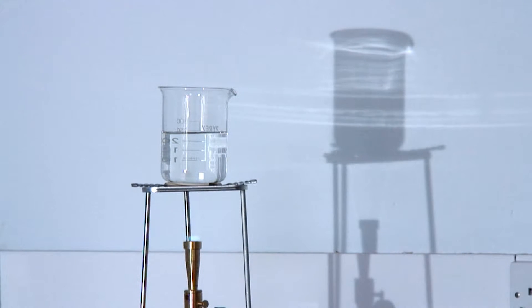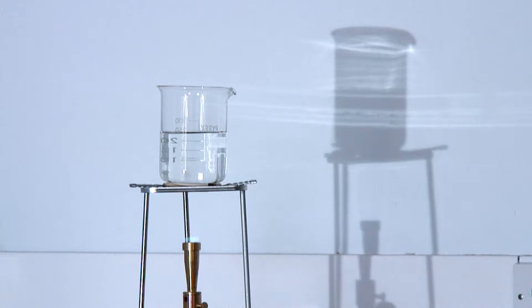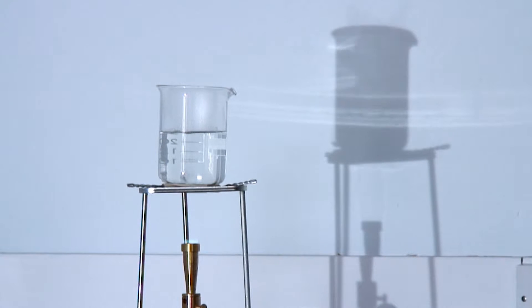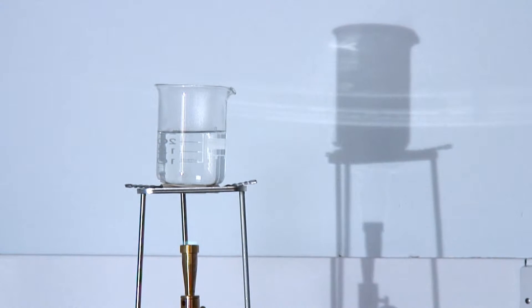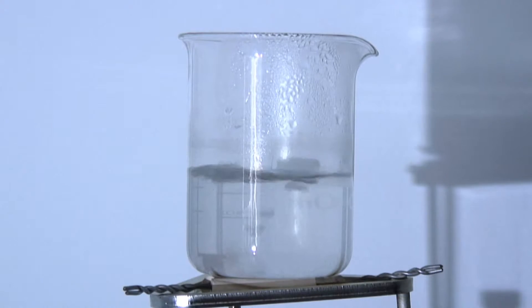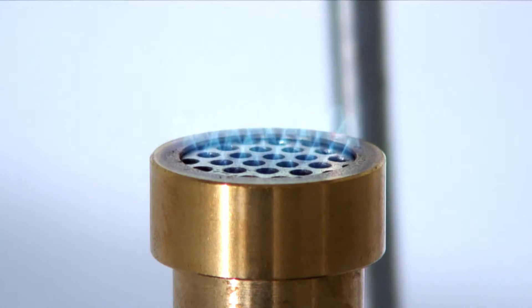To concentrate or evaporate a sample to dryness, the traditional method has been to boil the sample. Boiling uses heat energy to convert liquid to vapour, which appears as bubbles. The problem with regular boiling is that it may damage the sample.